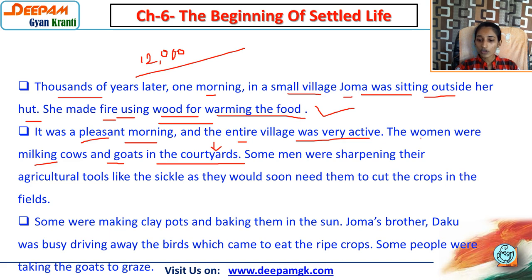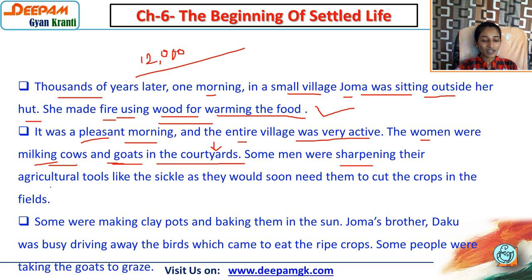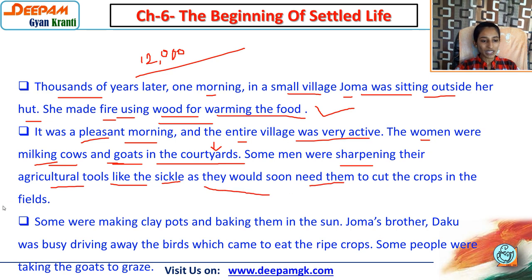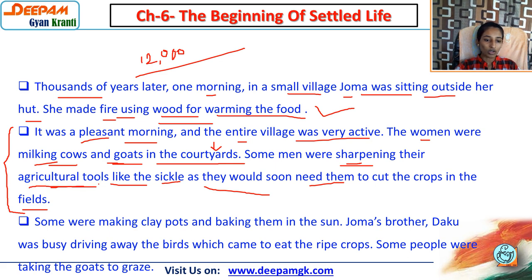The women were milking cows and goats in the courtyards - they had domesticated animals. Some men were sharpening their agricultural tools like the sickle, as they would soon need them to cut crops in the fields. From here we have the exact idea of farming.